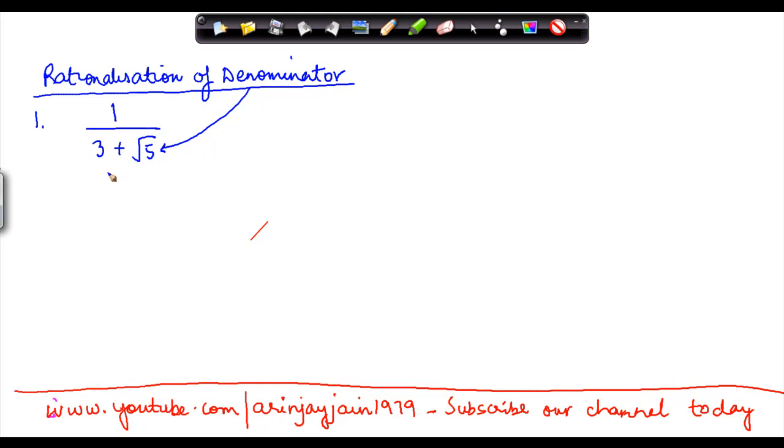Now in some of the earlier videos we have seen certain identities wherein one of the identities said that x plus under root y when multiplied by x minus under root y gives x square minus y.